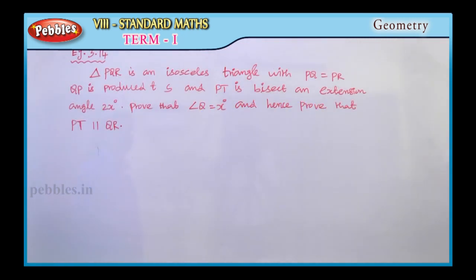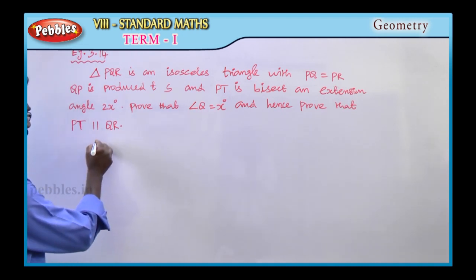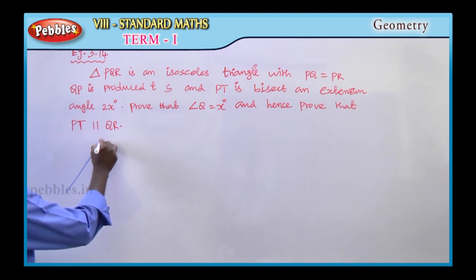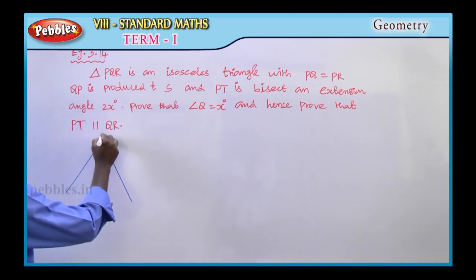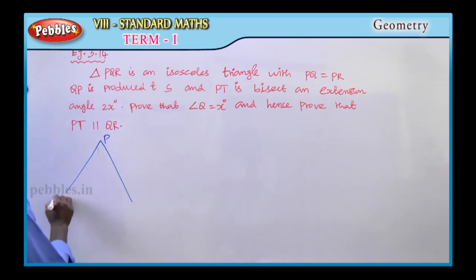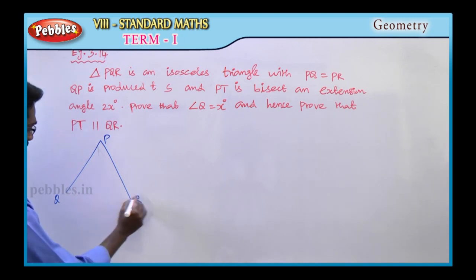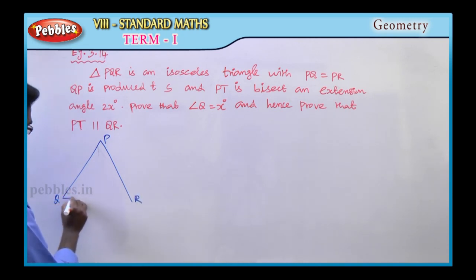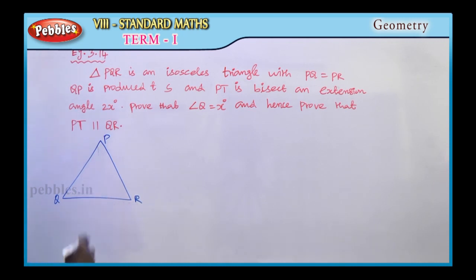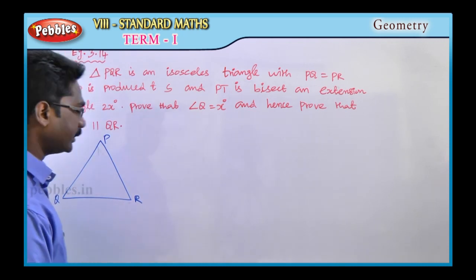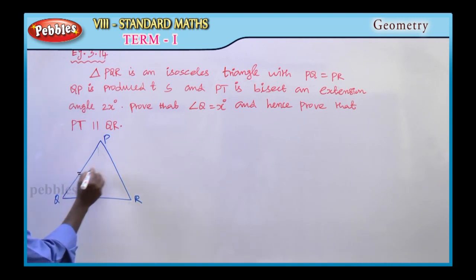Example 3.14. Triangle PQR is an isosceles triangle with PQ equal to PR. These two line segments PQ and PR are equal in length.